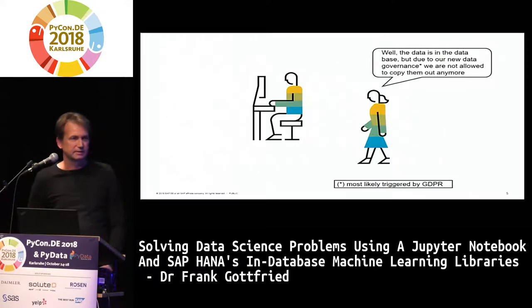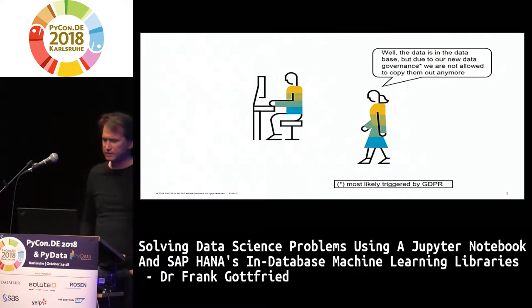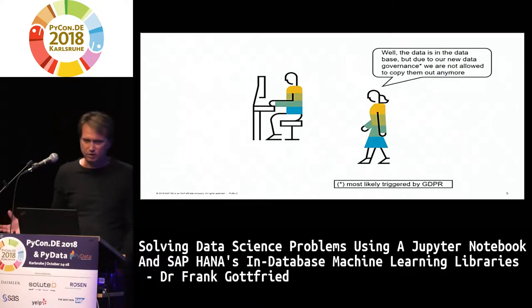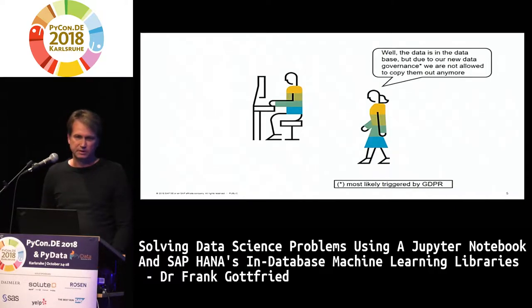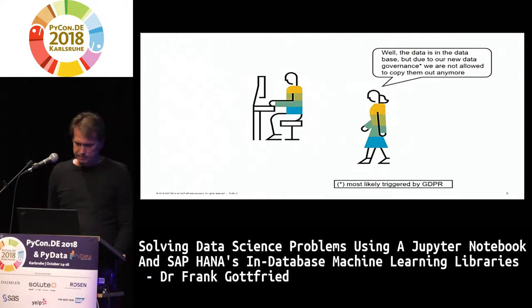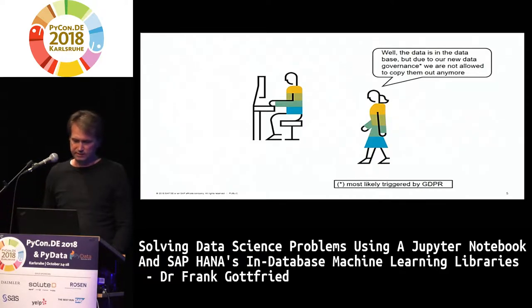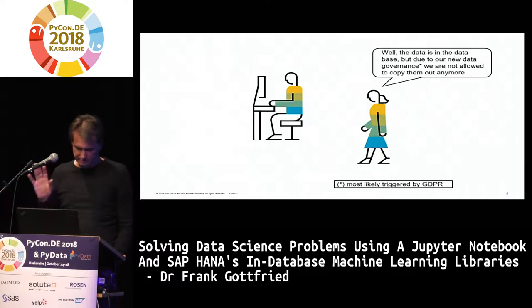But she said, I can't really give you the data. I mean, the data is there, but you can't really copy it out. It's in a database and we're no longer allowed to take it out. And we see that more and more in business contexts. GDPR is one of the reasons for doing that, but most companies these days are really tightening their data governance policies and therefore trying to stick to a single truth of data, keeping it in one record.